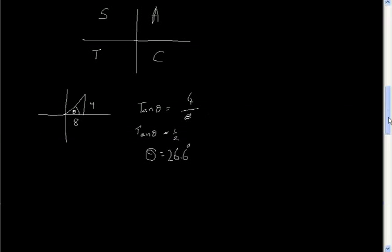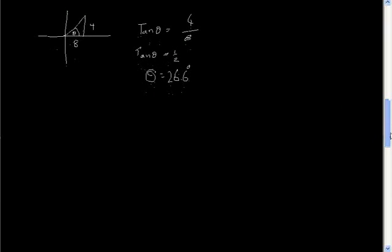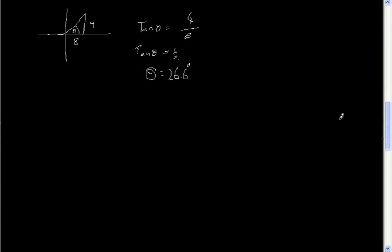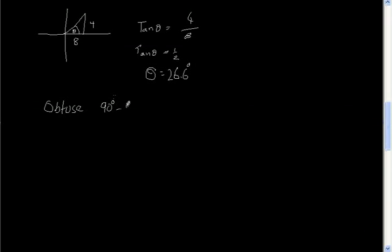Now let's look at an angle which is obtuse. What does that word mean? You've got to go back to your GCSEs. Obtuse is an angle that is between 90 degrees and 180 degrees. That's an obtuse angle, so it would be in the second quadrant.